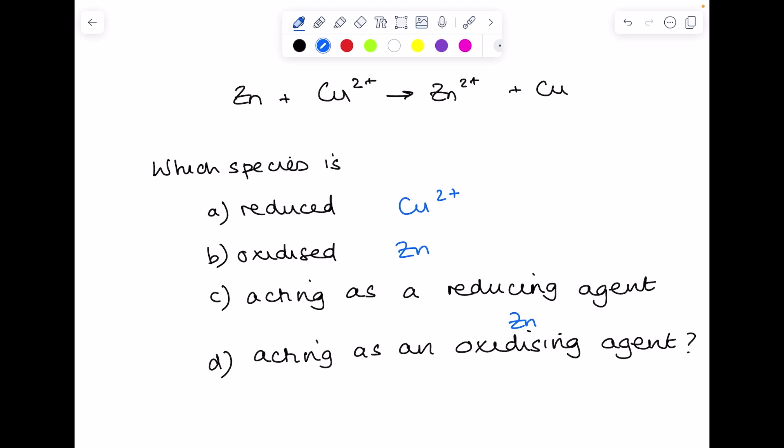Which substance is acting as an oxidizing agent? So which substance is causing another substance to lose electrons? Well, this is losing electrons. And so it must be the Cu2+ causing that. Remember, they're going to be reacting together.